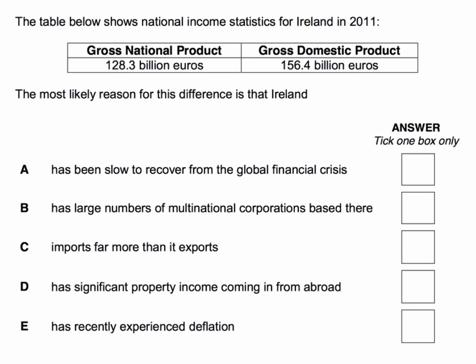Here's the question: the table below shows national income data for Ireland in 2011. You can see from the data that gross national product, GNP, is significantly less than gross domestic product. We're asked to find the most likely reason for this difference.